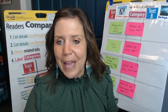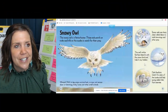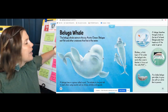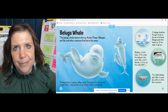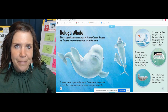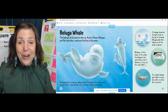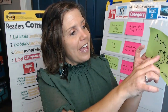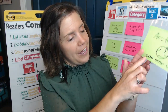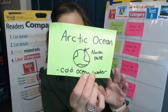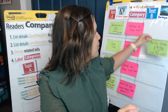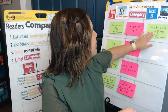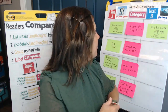Now I'm turning to the beluga whale page and you're going to help me pull out some details. The first category is where do they live. Did you say Arctic Ocean? They live in the Arctic Ocean at the North Pole in cold ocean water — kind of the opposite of the penguins.